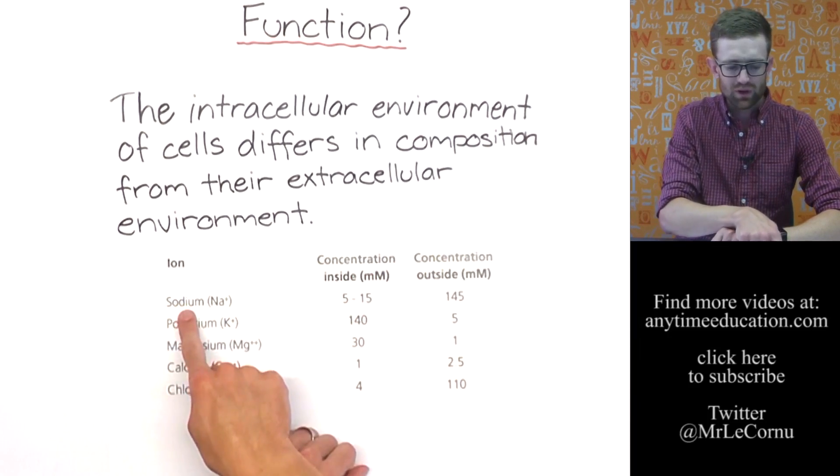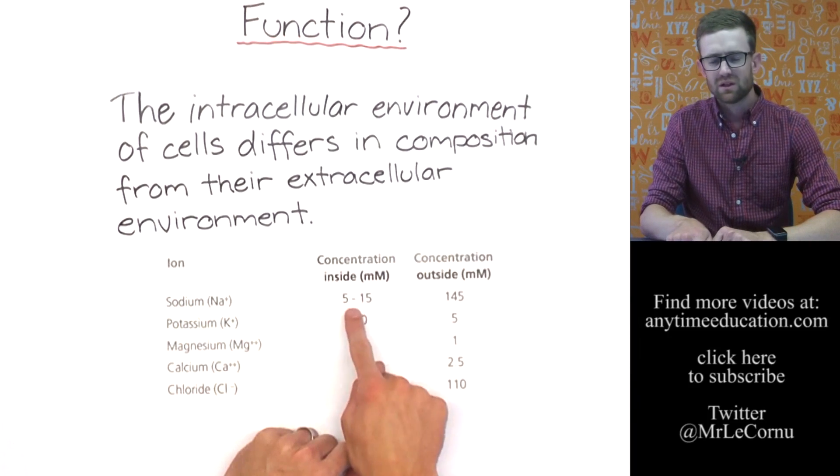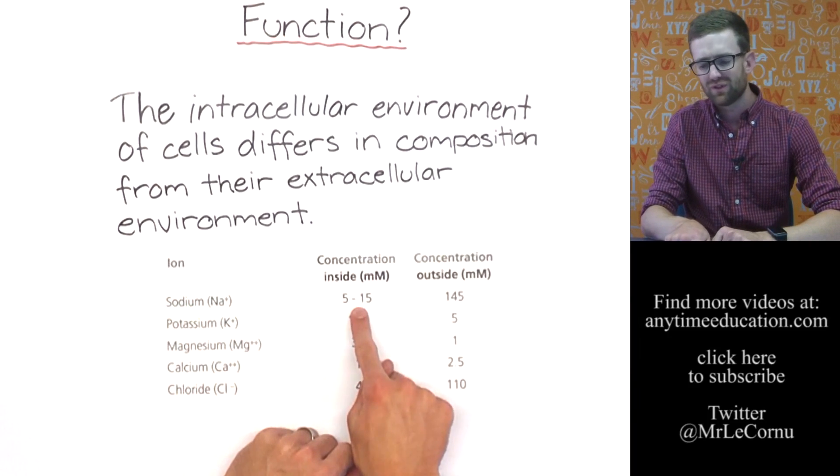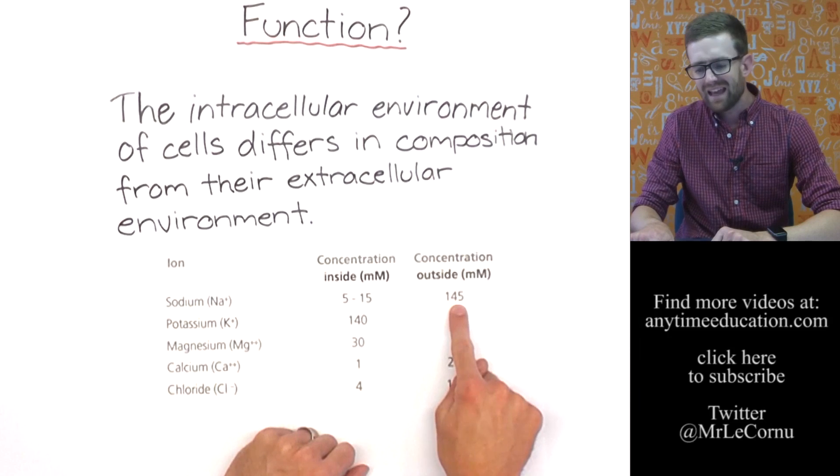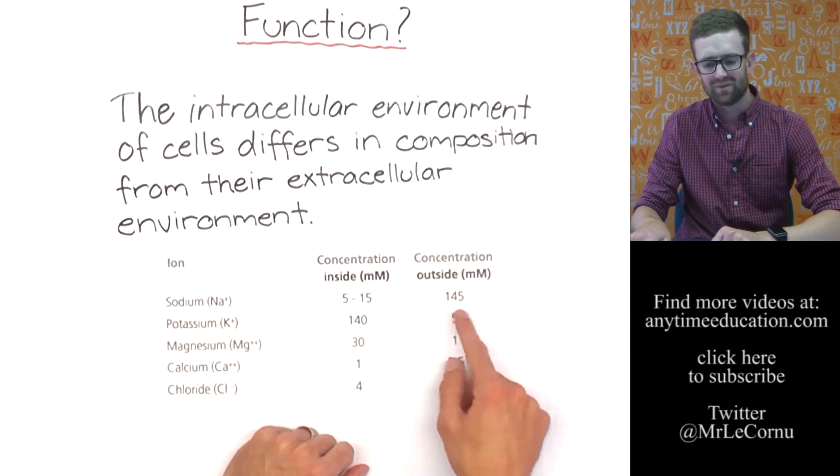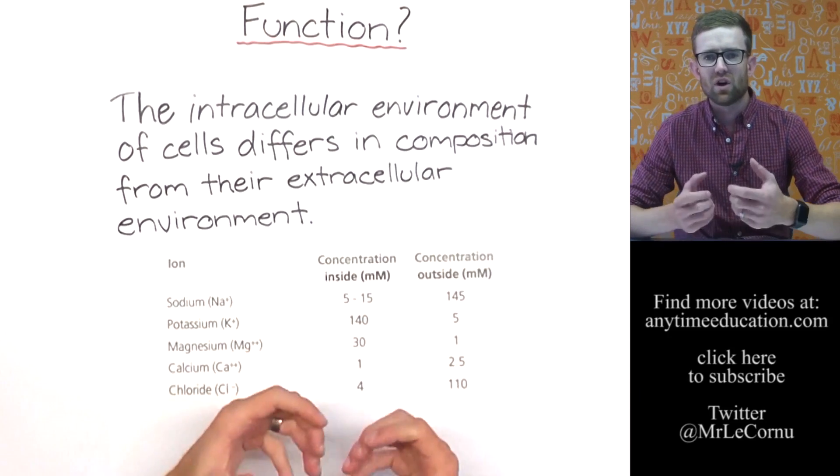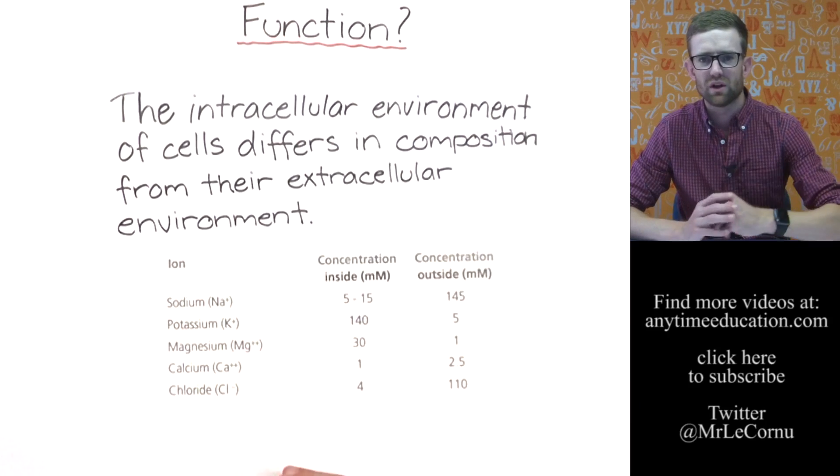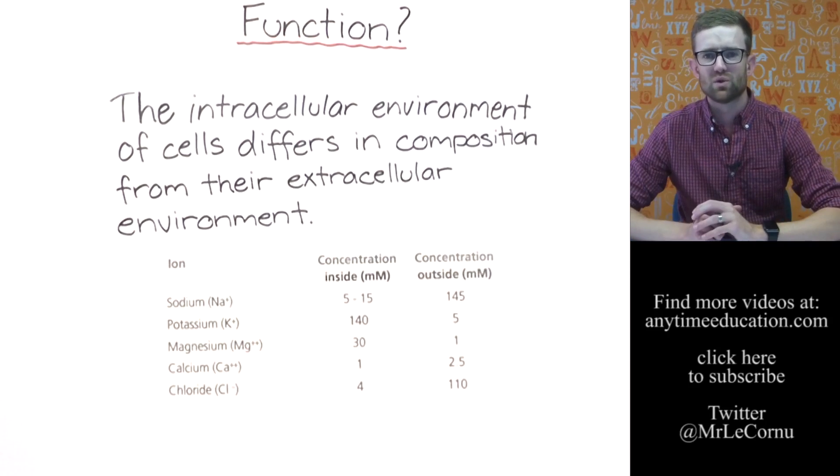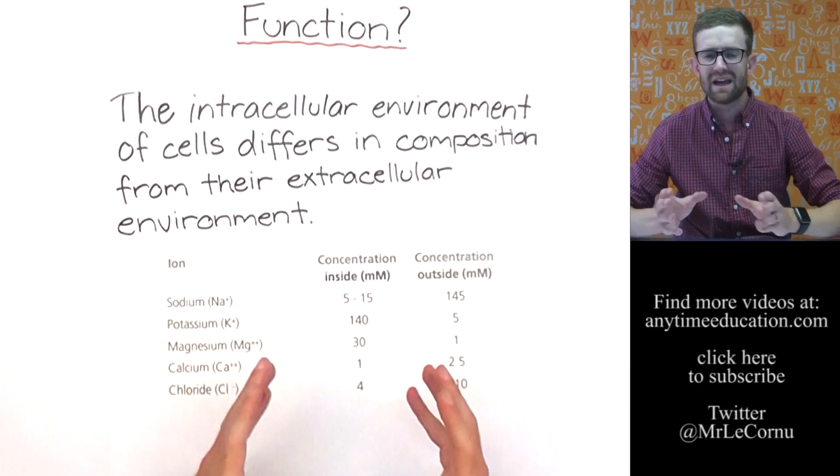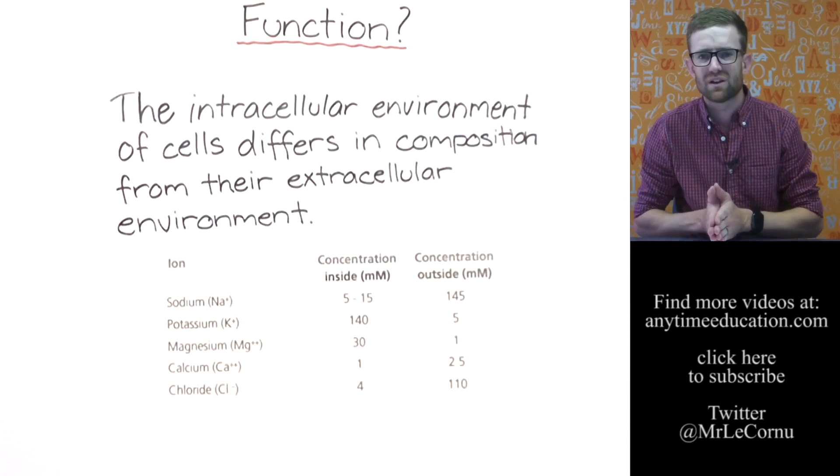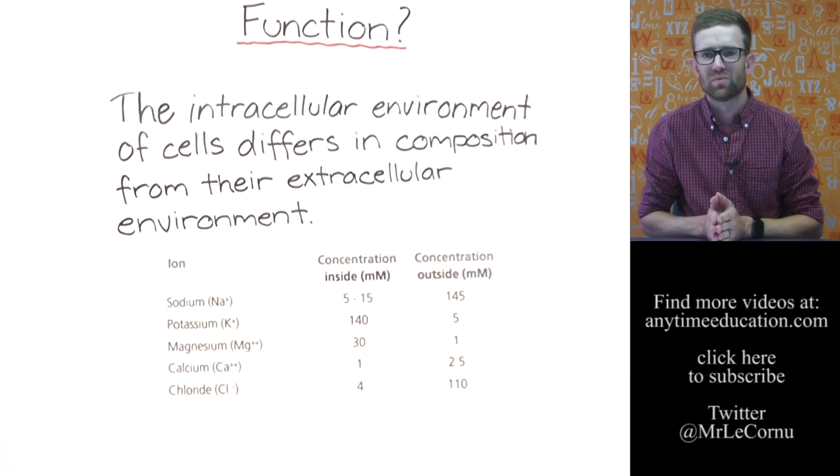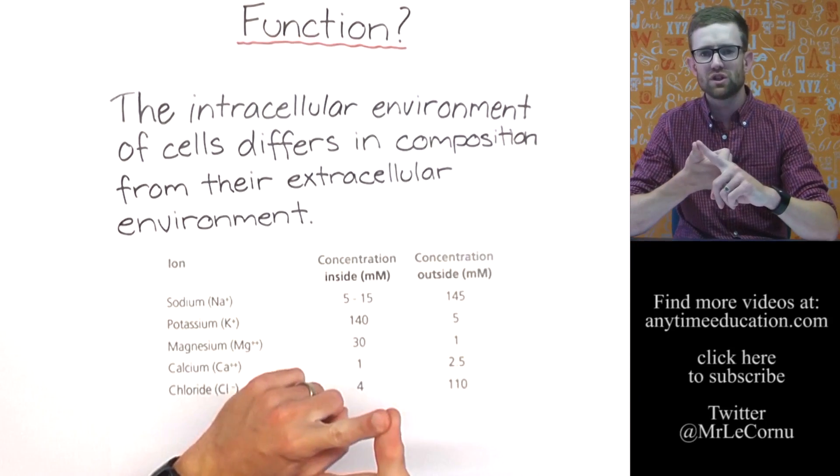If for example the concentration of sodium ions was to change from 5 to 15 and take in some sodium from the outside of the cell, which we can see there's lots of it, that would change the environment inside of the cell and it would mean that cellular processes would not occur correctly and the cell would be in big trouble.